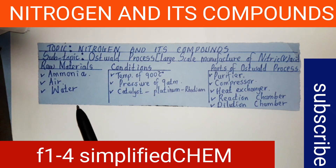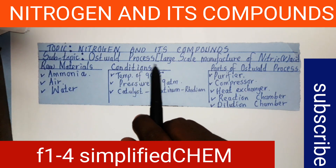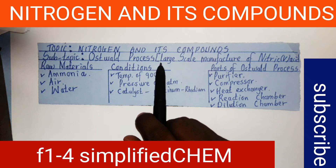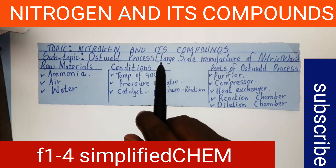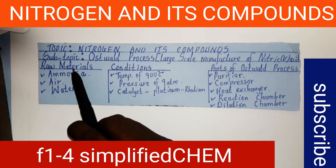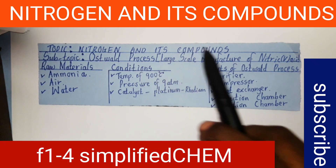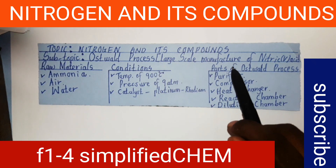The subtopic is the Ostwald process, which is the industrial manufacture of nitric acid. For a learner to easily understand how this process occurs, it's always important to understand the raw materials required, conditions required, and the parts of the process.